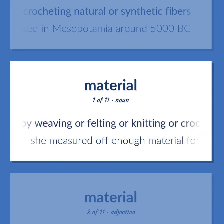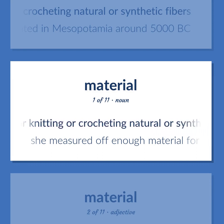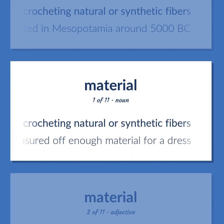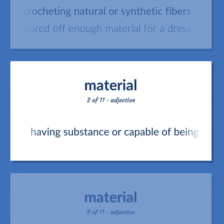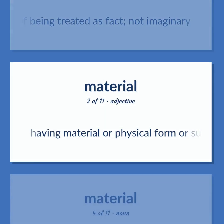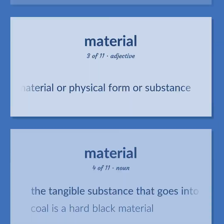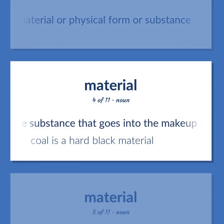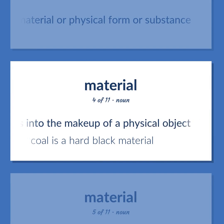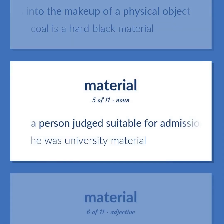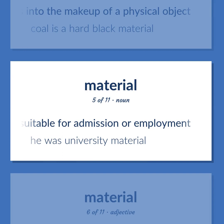Artifact made by weaving or felting or knitting or crocheting natural or synthetic fibers. She measured off enough material for a dress. Having substance or capable of being treated as fact; not imaginary. Having material or physical form or substance. The tangible substance that goes into the makeup of a physical object. Coal is a hard black material. A person judged suitable for admission or employment. He was university material.